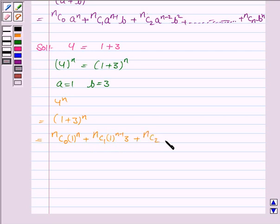nc2 1 to the power n minus 2 into 3 to the power 2, and so on. The last term will be ncn into 3 to the power n.